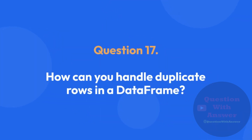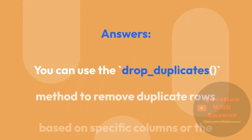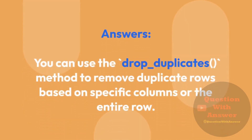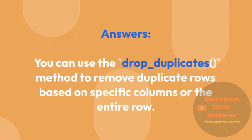Question 17: How can you handle duplicate rows in a DataFrame? You can use the drop_duplicates() method to remove duplicate rows based on specific columns or the entire row.